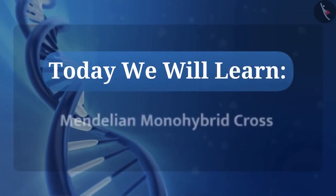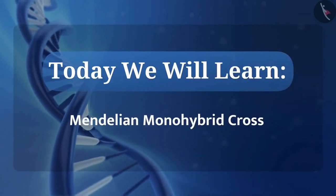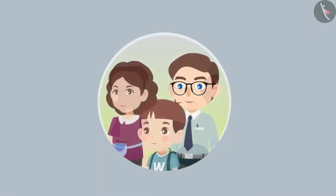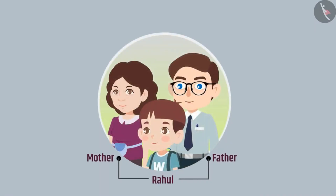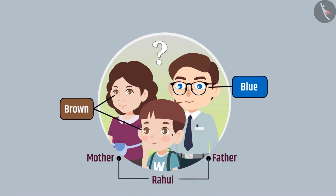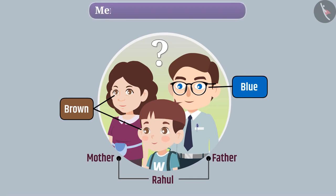Today we will learn Mendelian monohybrid cross. This is Rahul's family. Rahul and Rahul's mother have brown eyes, while his father has blue eyes. Can you tell me why Rahul's eye color is not blue? We get the answer for this question with the help of Mendelian monohybrid cross. Let's understand it.